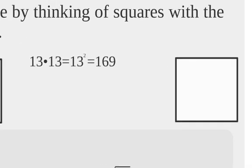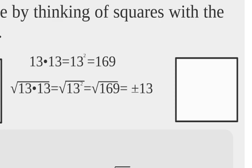What about something like this? Same thing. 13 times 13 is 13 squared with a little baby 2. It's 169. That's squaring it. Now, square rooting it, square root of 13 times 13 is the square root of 13 squared, which is the square root of 169 or just simply 13.